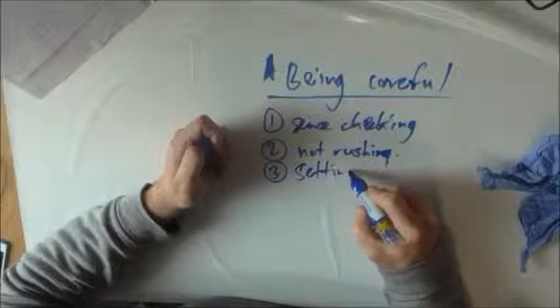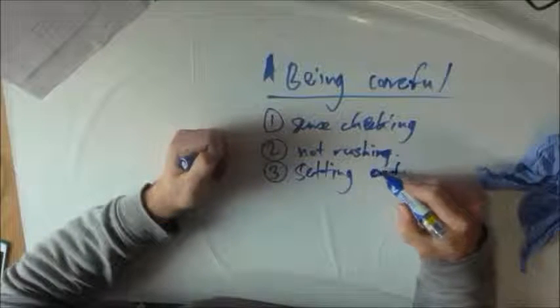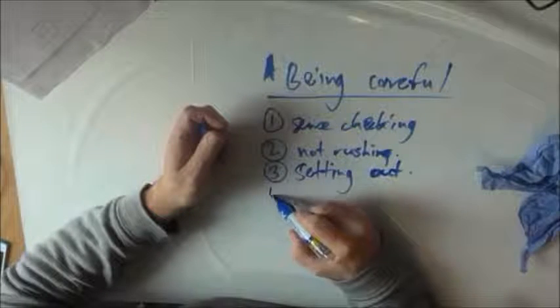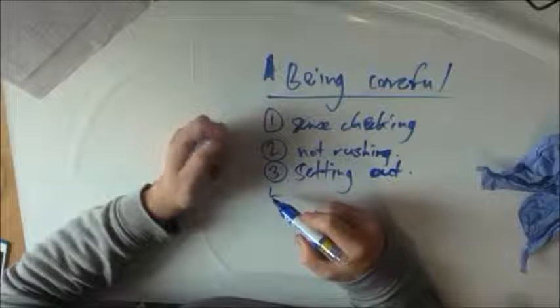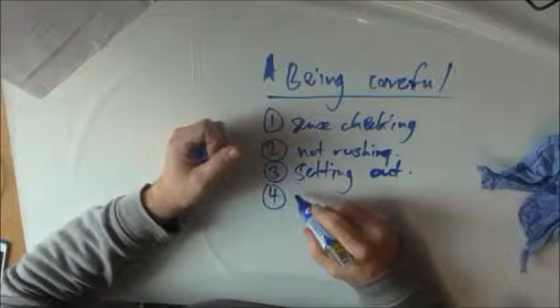The third piece of advice is setting out clearly. If you set out clearly you're much more likely to avoid silly mistakes. Remember the setting out is not just for the benefit of the person reading your work, it's also for your benefit so that you can better understand what you're doing, especially if you have to come back to it later.